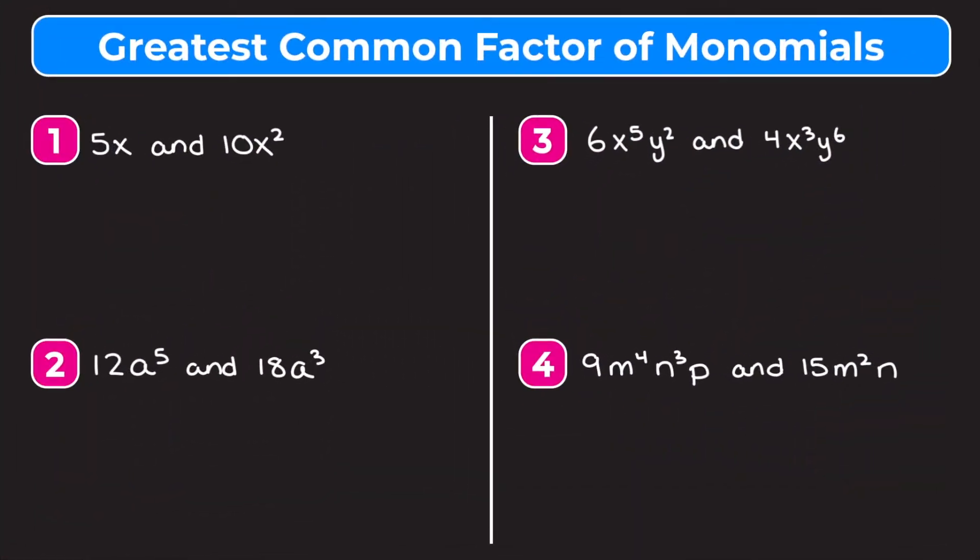In this video we're going to learn how to find the greatest common factor of monomials, which are basically just expressions that have one term. I'm going to show you two ways to do this: writing out the prime factors of each term, and a shortcut. Let's jump into example one, which is 5x and 10x squared.